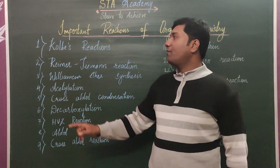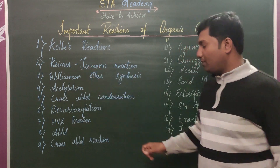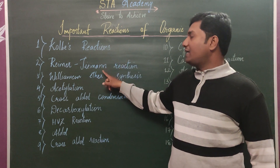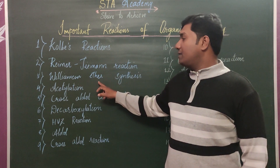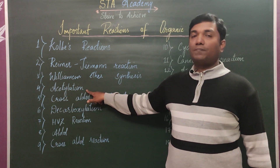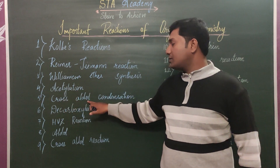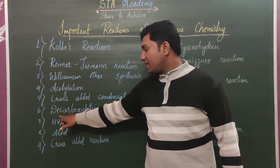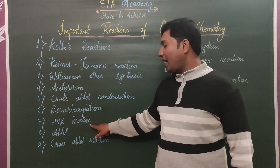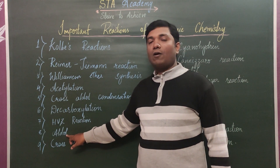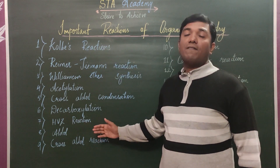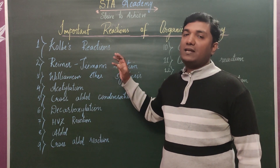Let us see the first reaction — the very important reaction. I have listed here a total of 18 reactions. The first reaction is Kolbe's reaction. Next is Reimer-Tiemann reaction. 3rd is Williamson Ether synthesis. 4th is Acetylation. 5th is Cross-Aldol condensation reaction. 6th is Decarboxylation. 7th is HVZ reaction. 8th is Aldol reaction. 9th is Cross-Aldol reaction. These are 9 very important reactions of organic chemistry.